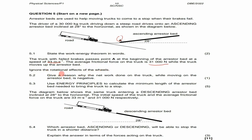5.2 says: give a reason why the net work done on the truck while moving on the arrestor bed is negative. When the truck is moving up the arrestor bed, the forces acting are moving down the slope — starting with the component of Fg which is Fg parallel sliding down the slope, and then also the frictional force, which will also be acting down the slope.